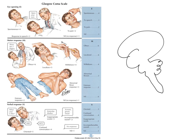For motor response, to get the maximum of six, you do what the doctor asks — you obey commands. If you think about what this requires: you must process incoming auditory information, understand what's being asked, and produce a relevant response. In order to obey a command, the whole pathway from brainstem through to cortex and back down to brainstem needs to be intact to give you a six.